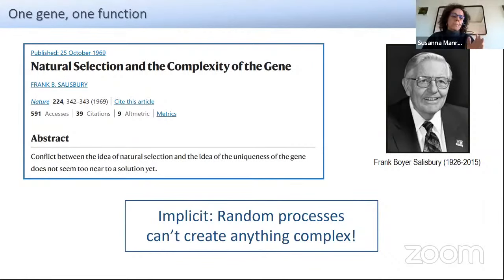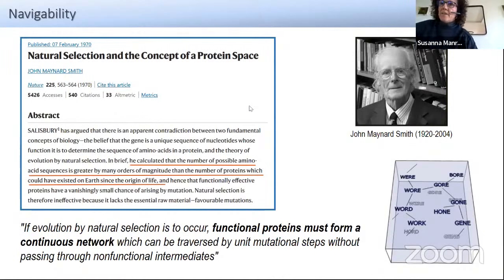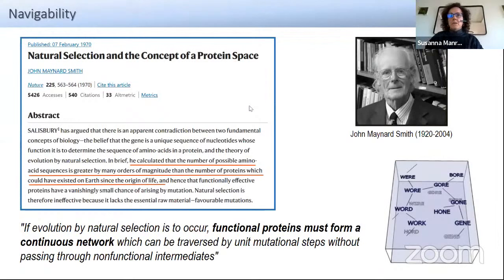Of course, this was a major problem for guaranteeing evolution by natural selection. This was what Salisbury proposed. Then came Maynard Smith suggesting this was just a proposal — there was no evidence of the existence of these networks. This was something demonstrated several years later, starting at the end of the 80s, at least 20 years later, starting with RNA.